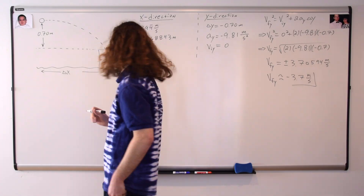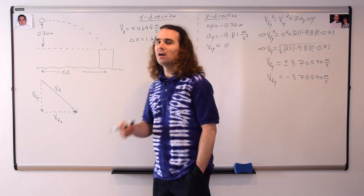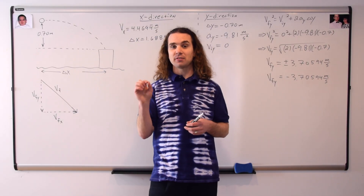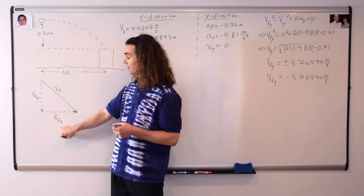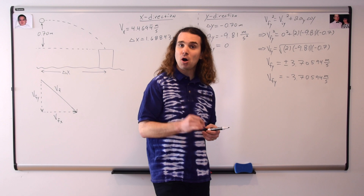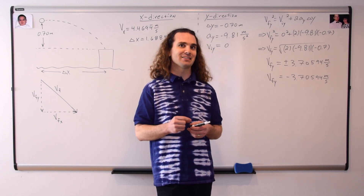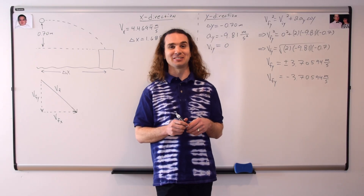Isn't that just the velocity final in the y-direction? Don't we need to include the velocity in the x-direction too? Absolutely. Notice that the final velocity we're solving for is the hypotenuse of the triangle, or the resultant vector, where the final velocity in the y-direction and the final velocity in the x-direction are the components of the resultant vector — the components of the final velocity. We get to review component vectors. How awesome is that?